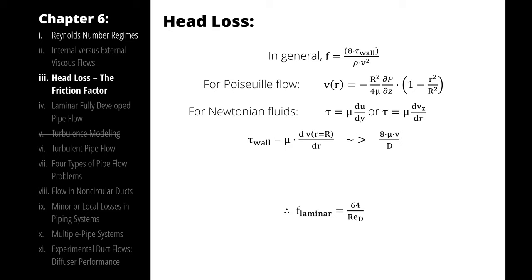When we take 8 times that result divided by density times velocity squared, we end up with 64 divided by the Reynolds number. So, for laminar flow, the Darcy friction factor is just 64 divided by the Reynolds number. A nice, simple, easy equation.